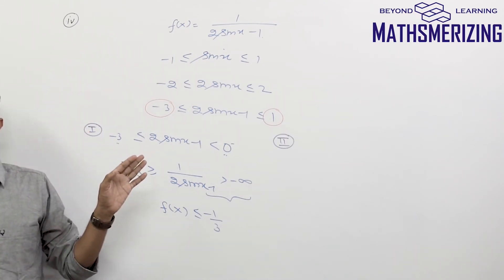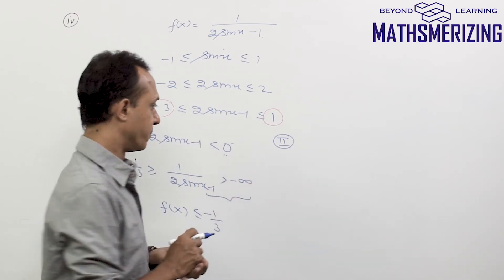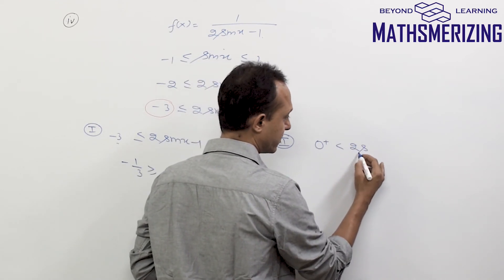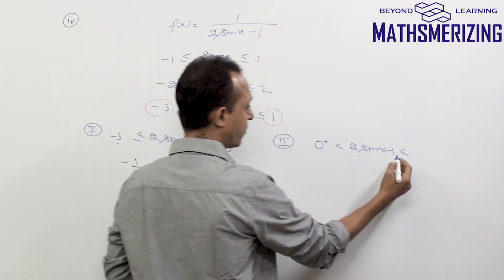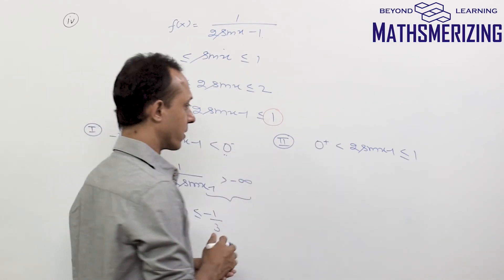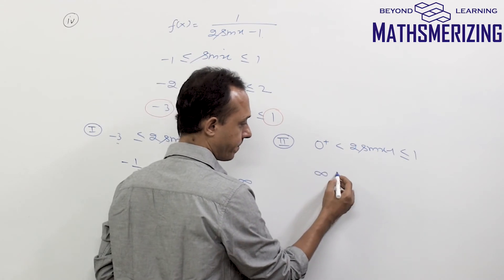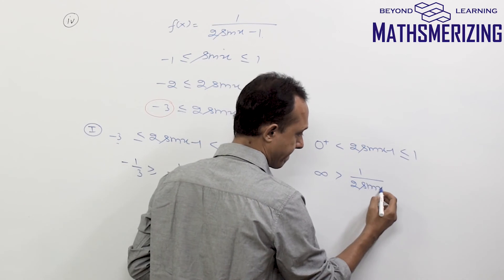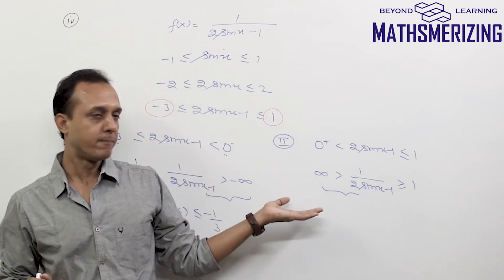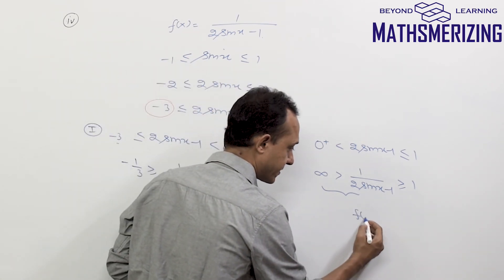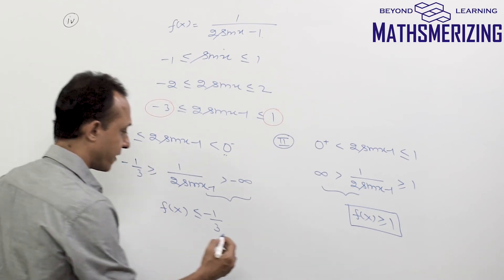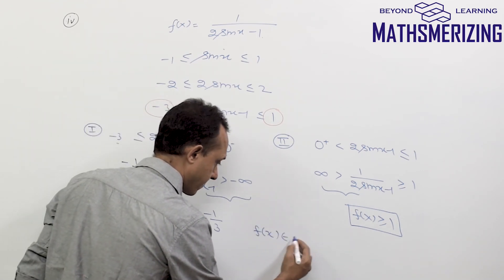Case 2: when 2sin(x) - 1 is a positive number, so 0⁺ ≤ 2sin(x) - 1 ≤ 1. Since both numbers are now positive, I take the reciprocal: 1/0⁺ = +∞ ≥ 1/(2sin(x) - 1) ≥ 1/1 = 1. Since every number is less than positive infinity, I simply write f(x) ≥ 1.